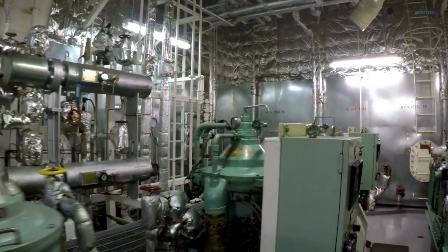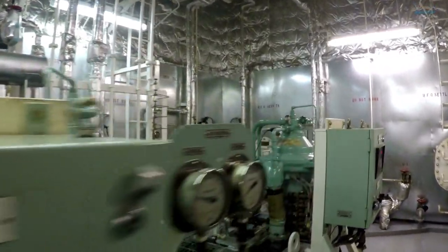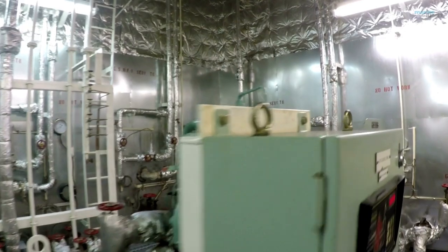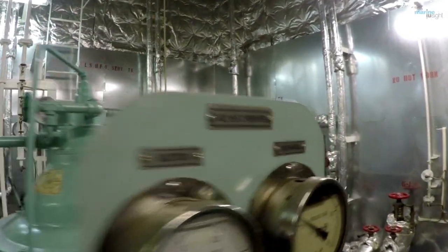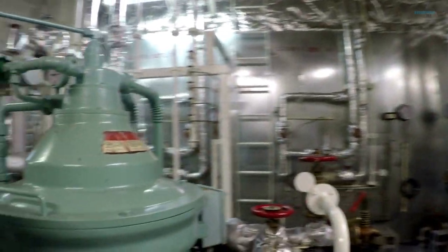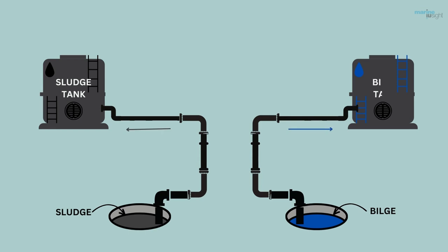The fuel is further treated in the centrifugal separator. Here, additional impurities in the form of sludge and water are separated and sent to sludge tank. Similarly, all machinery leakage are sent to bilge or sludge tank, depending upon the quantity of oil the leakage mixture contains.